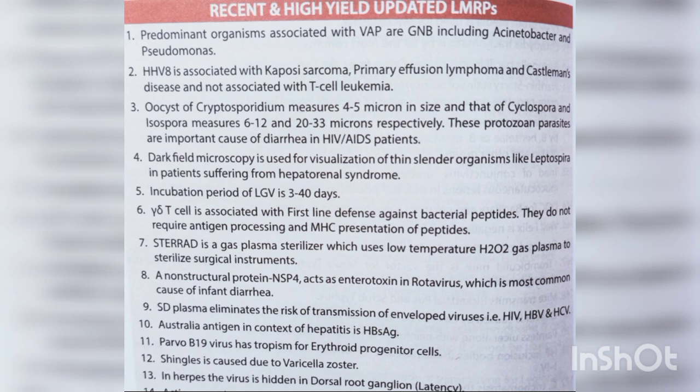HHV-8 is associated with Kaposi's sarcoma, primary effusion lymphoma and Castleman's disease, and is not associated with T-cell leukemia. Oocysts of Cryptosporidium measure 4-5 microns, while those of Cyclospora and Isospora measure 6-12 and 20-33 microns respectively. These protozoan parasites are important causes of diarrhea in HIV/AIDS patients.